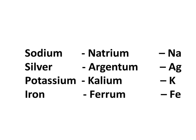Now, the symbols of all elements are not taken from English name. Instead, they are taken from their name in Latin, German or Greek. For example, the Latin name of Sodium is Natrium and its symbol became Na. The Latin name of Silver is Argentum, so its symbol is Ag.